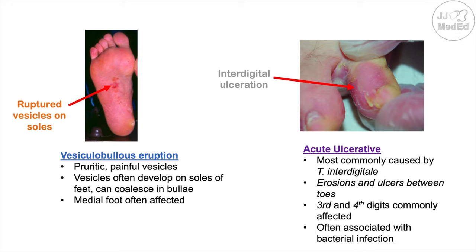To summarize the four clinical presentations: interdigital is the most common and involves scaling between the toes; hyperkeratotic involves scaling and thickening on the soles; vesiculobullous involves pruritic painful vesicles on the medial sole; and acute ulcerative involves trichophyton interdigitale infection with erosions and ulcers between the toes, often with associated bacterial infections.